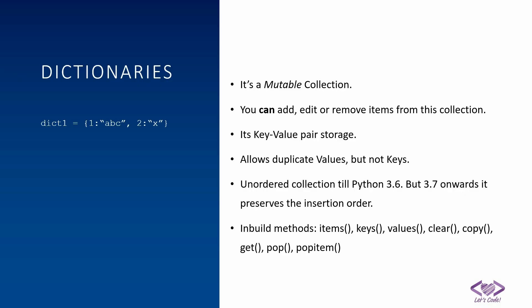Dictionary is a mutable collection but it acts like a key-value pair storage. We have seen lists and tuples wherein we can store a collection of values, but in this we will have to store it as a key-value pair — there will be a key and a value associated with it. It's a mutable collection, meaning you can add, edit, or remove items. Duplicate values are allowed but duplicate keys are not — the keys should be unique.